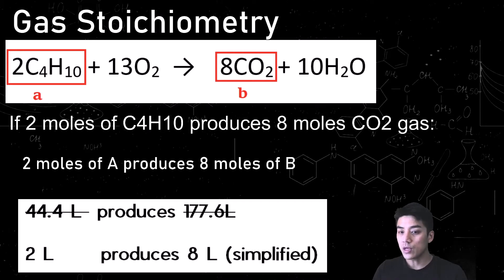And because we know from Avogadro's principle that 1 mole of any gas is equal to 22.4 liters, you could also say 44.4 liters of A will produce 177.6 liters of B. But when you simplify it, what you're actually going to get is 2 liters produces 8 liters.